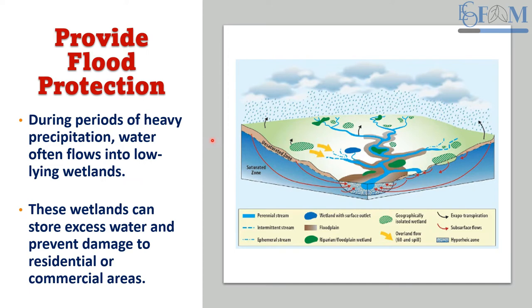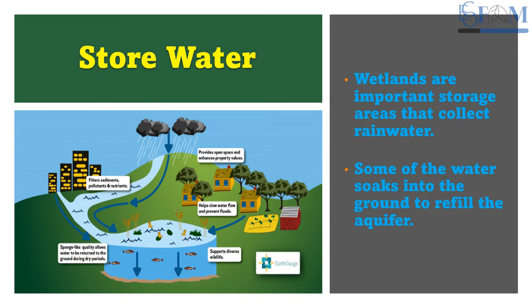The second quality is flood protection. During periods of heavy precipitation, water flows into low-lying wetlands. Wetlands act as a sponge, absorbing heavy rainfall, and those located particularly on the coast serve as a natural barrier from storm surges. They not only provide flood protection but also protect against storm surges caused by cyclones or tsunamis. These wetlands can store excess water and prevent damage to residential and commercial areas.